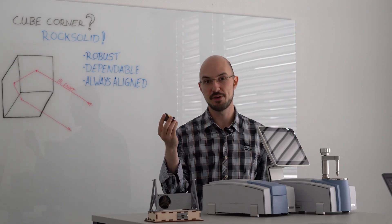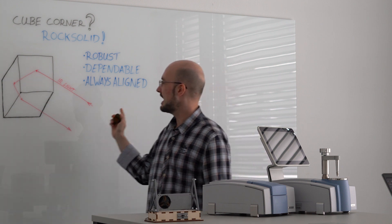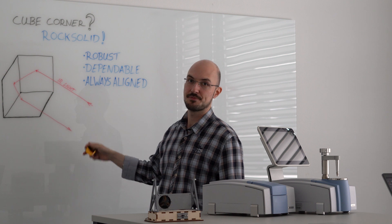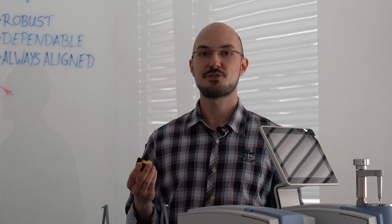This is a cube corner mirror used in our spectrometers like the Alpha. Any light that enters the mirror is reflected in a way that it exits in the same direction, no matter if the mirror is tilted or misaligned.